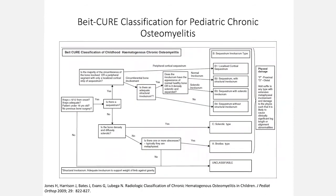I like the BAIT CURE classification of pediatric chronic osteomyelitis, developed at the Malawi CURE Hospital. This acknowledges that children have open physes and develop a more robust involucrum response. You can classify the osteomyelitis broadly into three categories: Category B is a sequestrum with involucrum type; Category C is a sclerotic type where you may or may not have a medullary canal; and Type A is a Brodie's abscess, where you can see a well-circumscribed lytic area.